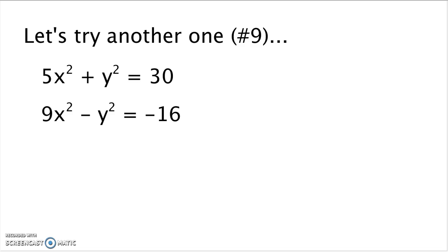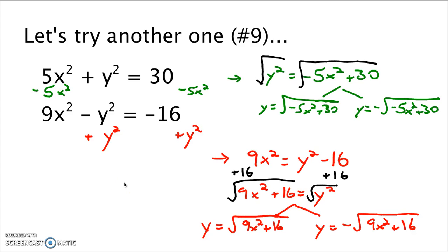Let's try another one and do the same thing. Once you've paused the video and tried it, I will talk you through the steps to put these in the form y equals something. In this first equation, I subtracted 5x squared from both sides, getting y squared equals negative 5x squared plus 30. The y is almost by itself except for the squared, so I took the square root of both sides. That gets y by itself, and this is the point where I separated it into two separate square root equations — the positive version and the negative version of what was under the radical.